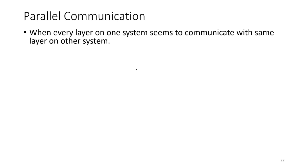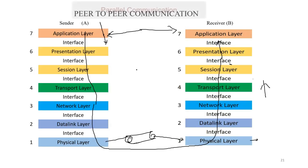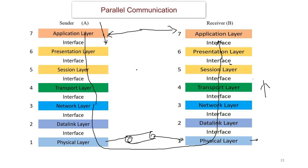Now, what is parallel communication? Parallel communication is basically an extended version of peer-to-peer communication. In peer-to-peer communication, a layer on one system communicates with the same layer on another system. But if there is involvement of more than one layer — when every layer on one system seems to communicate with the same layer on the other system — that is known as parallel communication. For example, the application layer on the sender side communicates with the application layer on the receiver end.